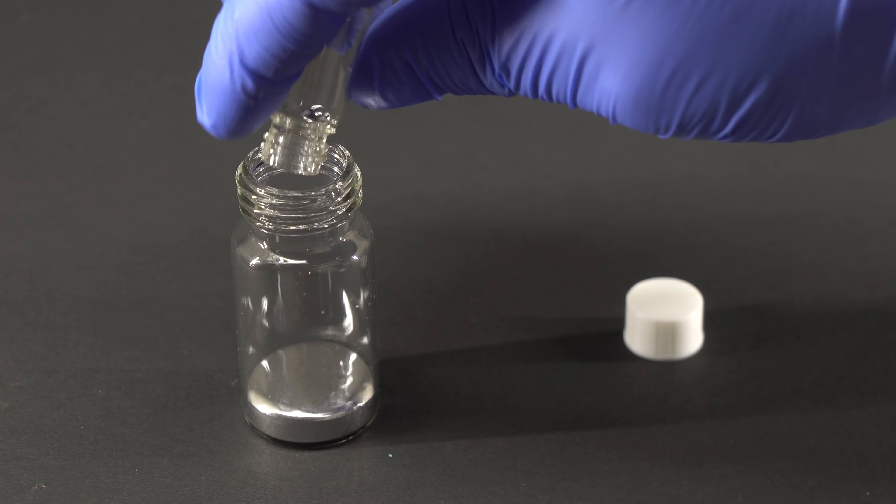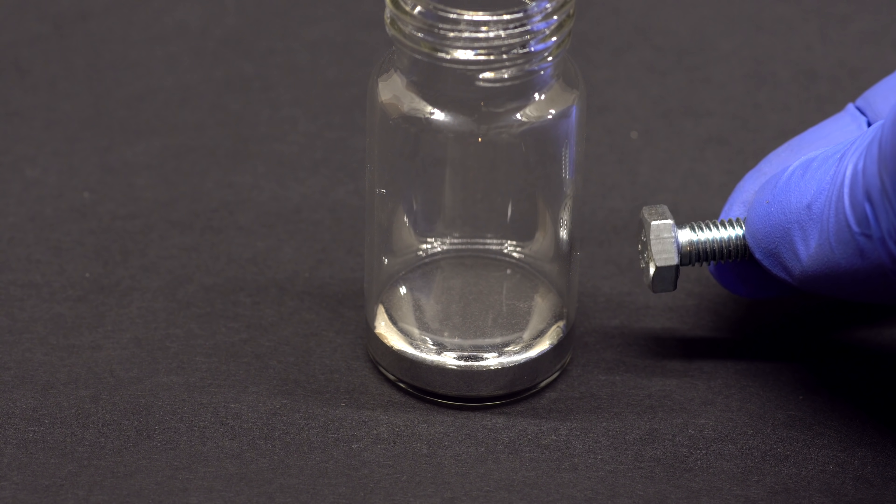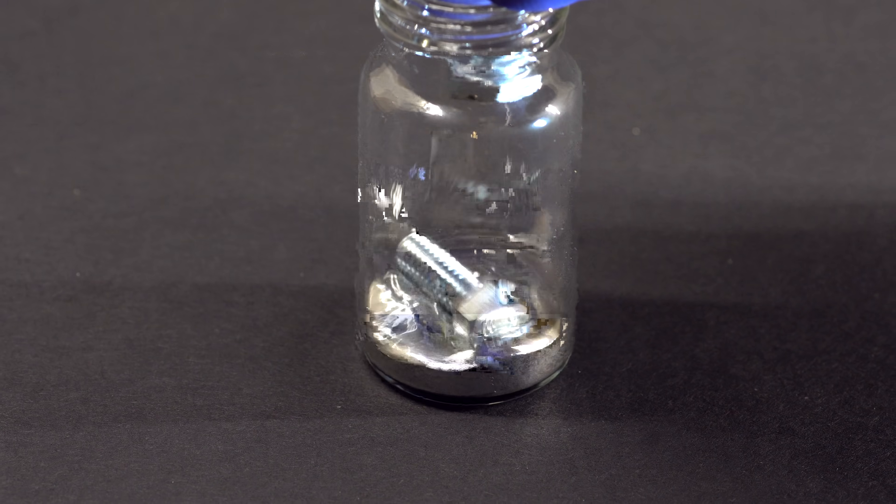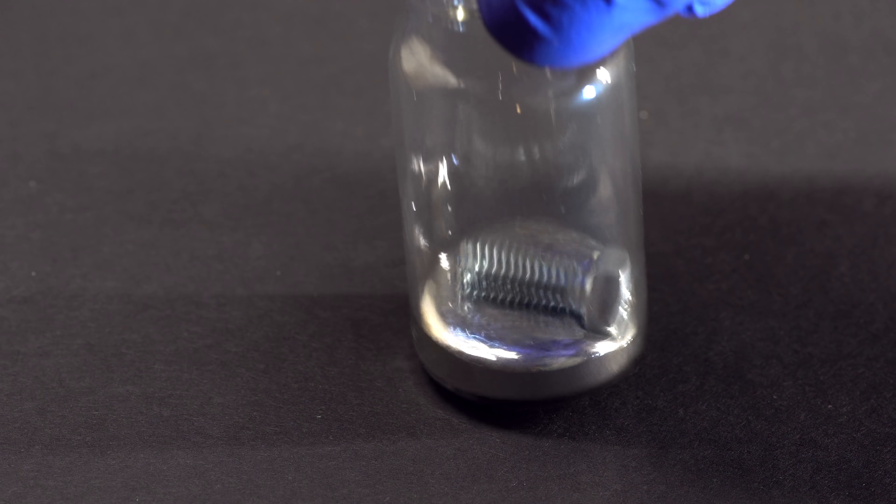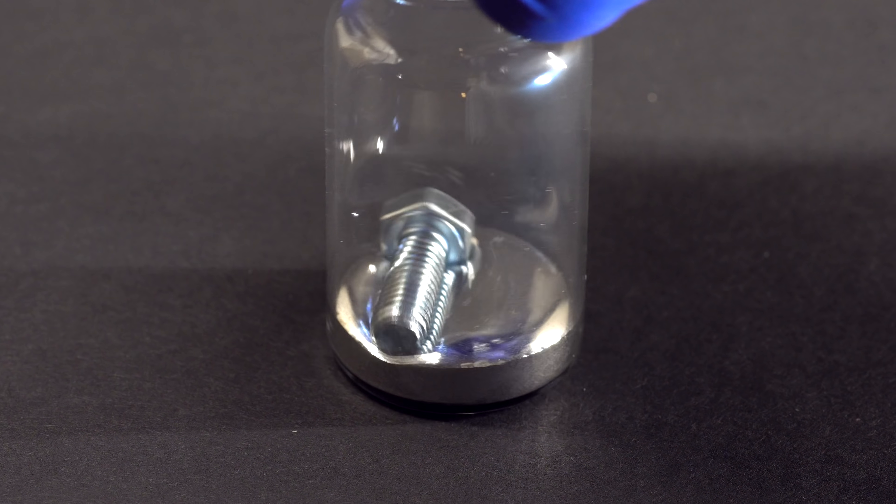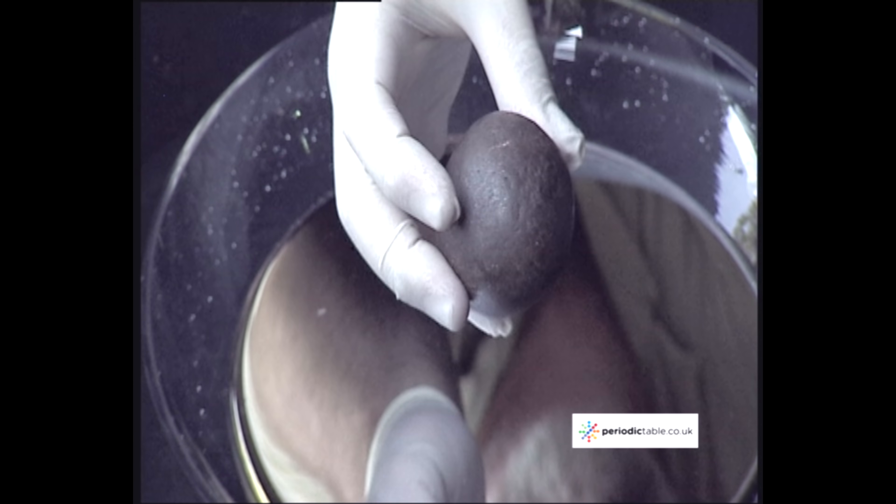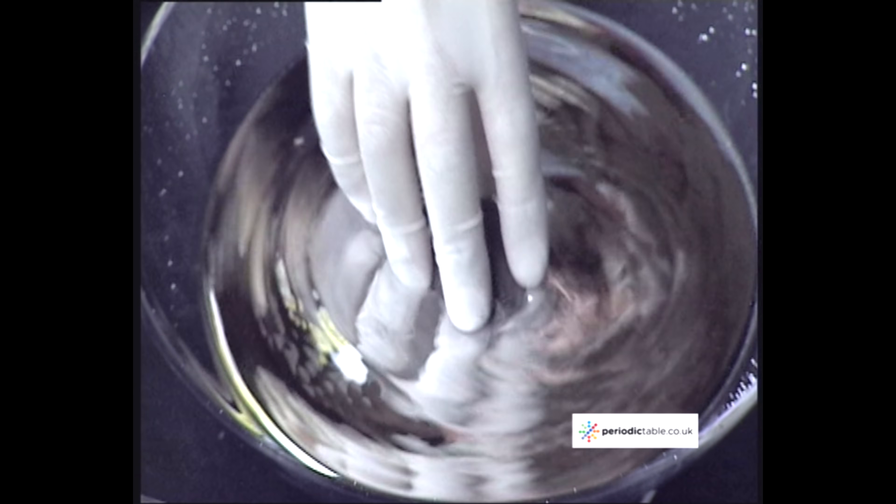Because of mercury's high density, some other metals may float on top of it. For instance, this steel bolt, even lead, which is known for its high density, floats on top of the liquid mercury like a wood bar.